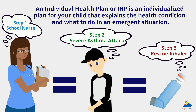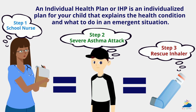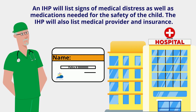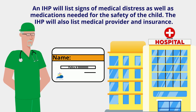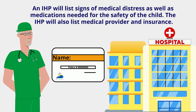Step 1: school nurse. Step 2: severe asthma attack. Step 3: rescue and response. An IHP will list signs of medical distress as well as medications needed for the safety of the child.